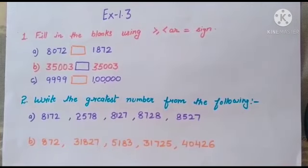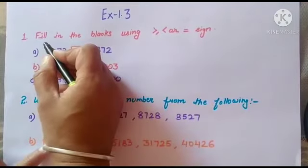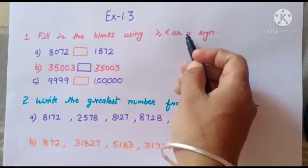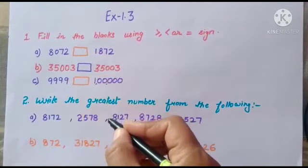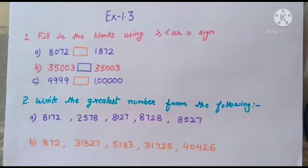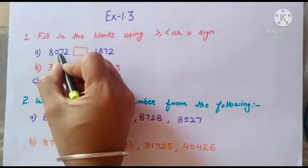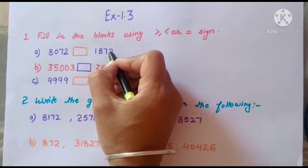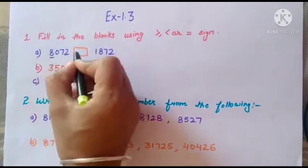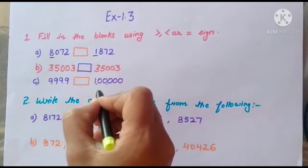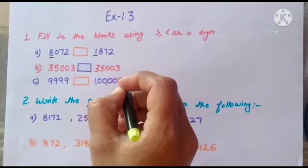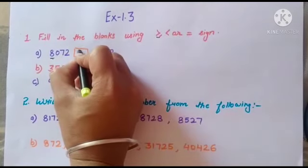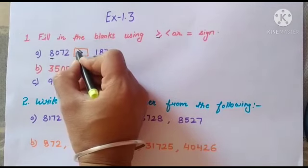In Exercise 1.3, Question 1: Fill in the blanks using the correct sign. The first pair is 8072 and 1872. We look at the first digit — 8 is greater than 1, so we open the mouth of the sign toward the greater side. We put the greater-than sign here, with the mouth open toward 8072.